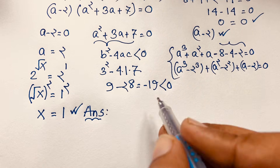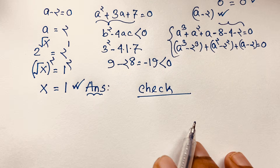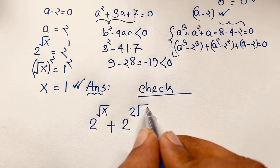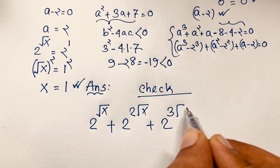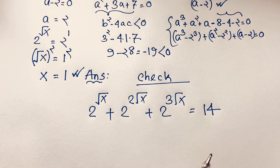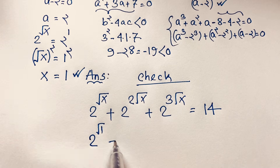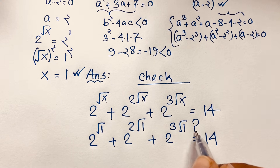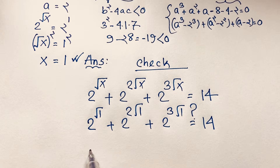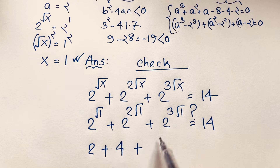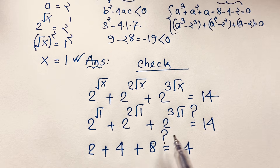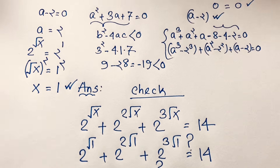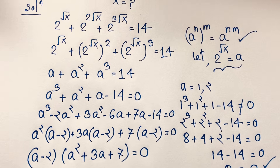Let's verify: our question is 2 to the power square root x, plus 2 to the power 2 square root x, plus 2 to the power 3 square root x, equals 14. Substituting x equals 1, square root of 1 is 1, so we get 2 to the power 1, plus 2 to the power 2, plus 2 to the power 3, which is 2 plus 4 plus 8, equals 14. Left hand side equals right hand side — confirmed! Thank you all; if you enjoyed this math problem, please subscribe to my channel for other interesting videos. Goodbye!